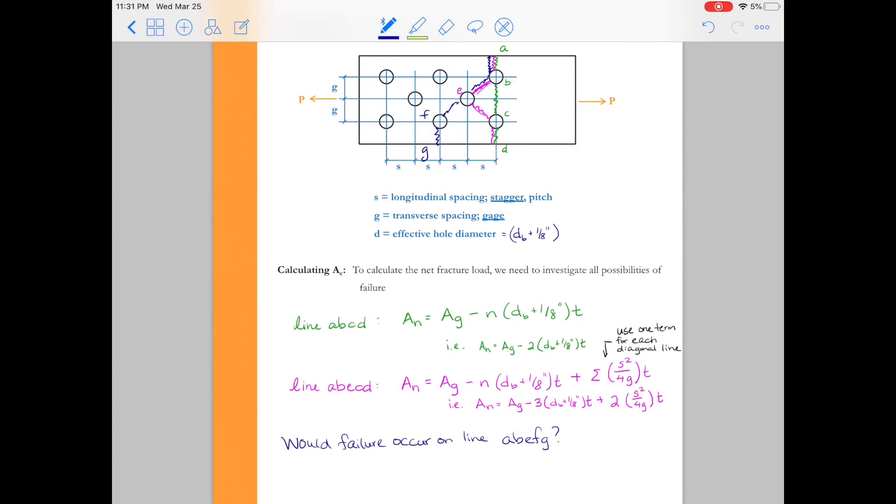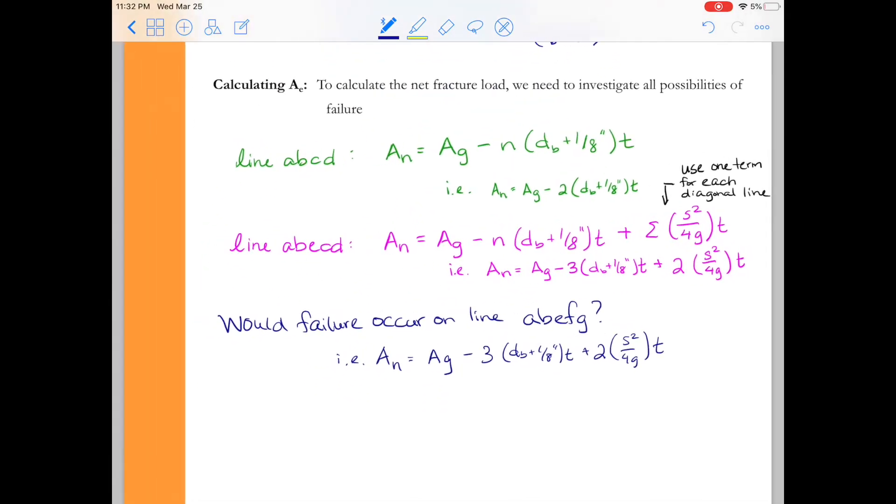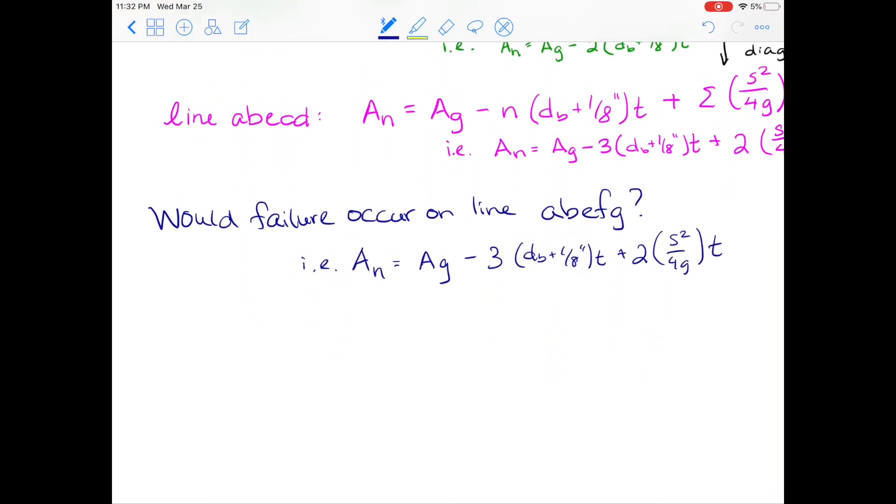Well, let's go ahead and come up with the net section area for this line. So in our particular example, our net section area would be the gross area minus. Now the blue path there, A, B, E, F, G, passes through three bolt holes. So we have the minus three times the diameter of the bolt plus an eighth of an inch times the thickness of the plate. And then it also travels on two diagonals. So we add 2 times s squared over 4g times t. So we see that the net section area for this path happens to be the same as for that magenta path, A, B, E, C, D.